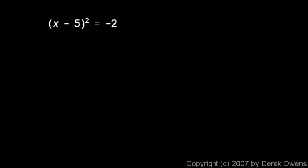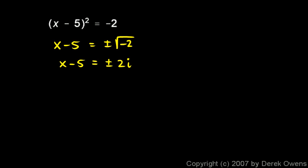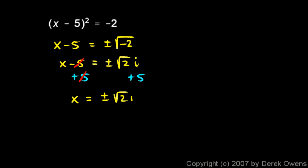One more: (x - 5)² = -2. I'm trying to find x, so I take the square root of each side, leaving x - 5 = plus or minus the square root of -2, which is plus or minus √2·i. Then I add 5 to each side to solve for x, giving x = 5 ± √2·i. So the two answers are 5 + √2·i and 5 - √2·i.